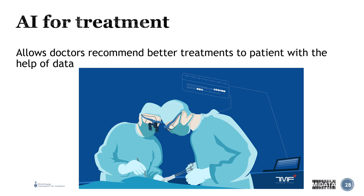Treatment is a big one. Precision medicine — to allow doctors to recommend better treatments for patients through the help of data — is huge. Being able to know when and how to treat is so important because the population is heterogeneous. If everyone was the same with no variability in the data, you wouldn't need a statistician and treatment would be easy. But that's not the case — everyone is different, which brings us from what was originally personalized medicine to what is now precision medicine.